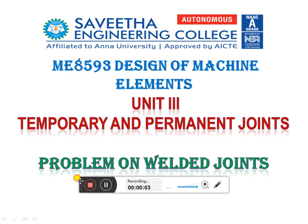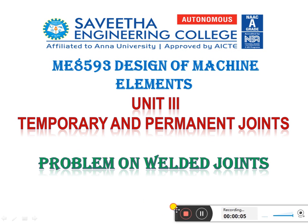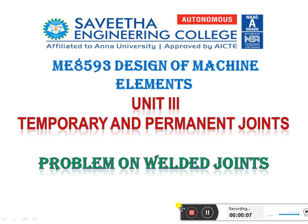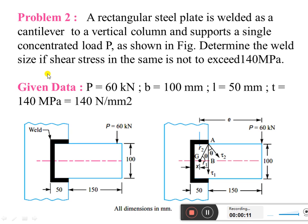Warm greeting to all. This session we are going to discuss a problem on welded joint. Problem 2: A rectangular steel plate is welded as a cantilever to a vertical column and supports a single concentrated load P as shown in figure. Determine the weld size if shear stress in the same is not to exceed 140 MPa.